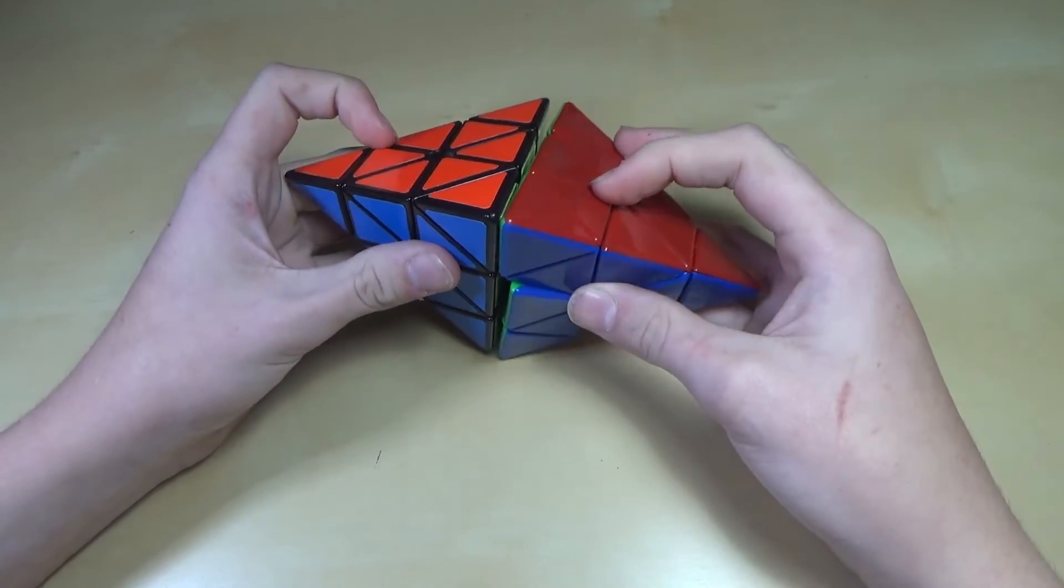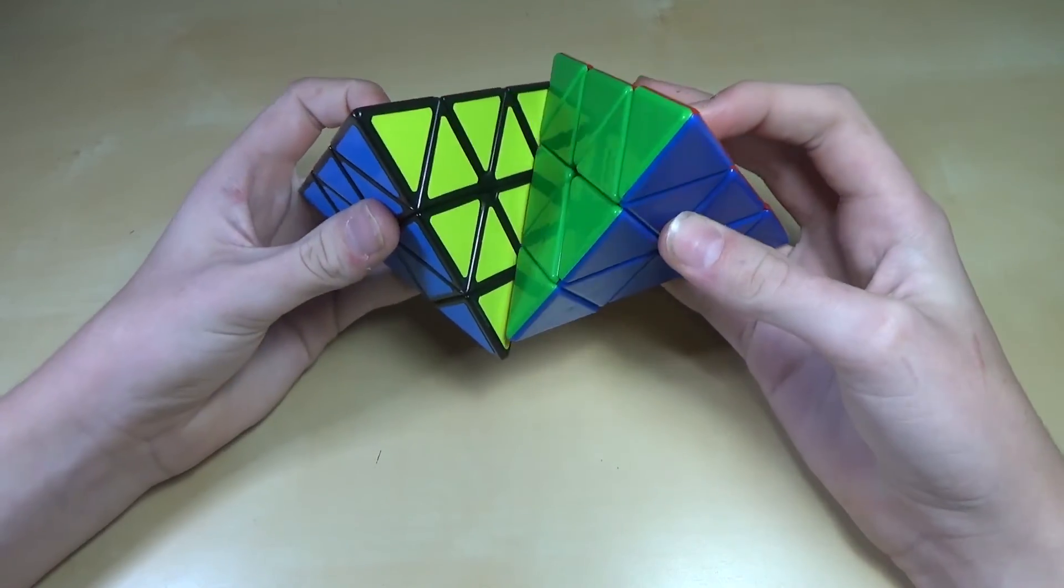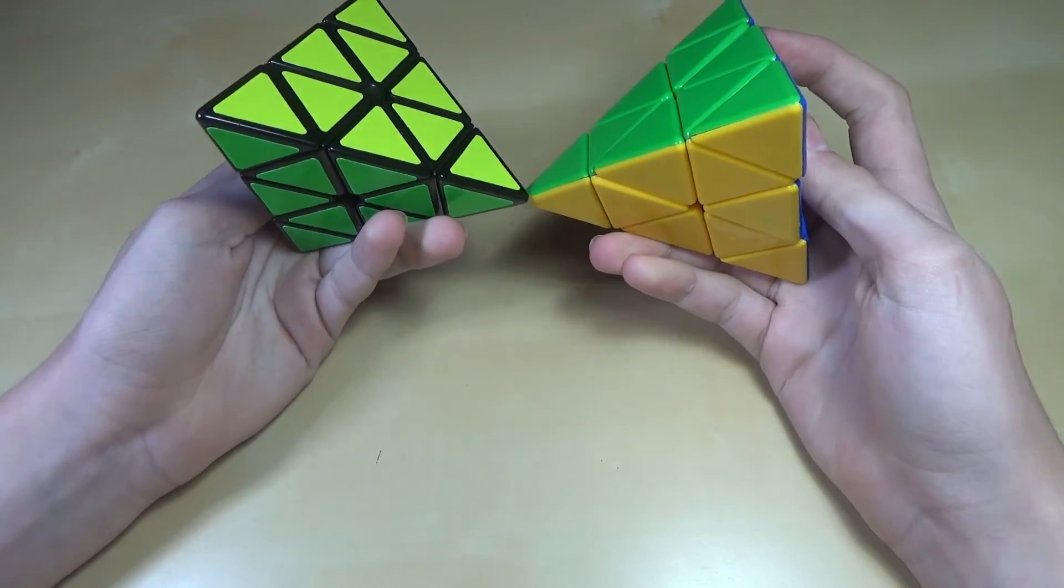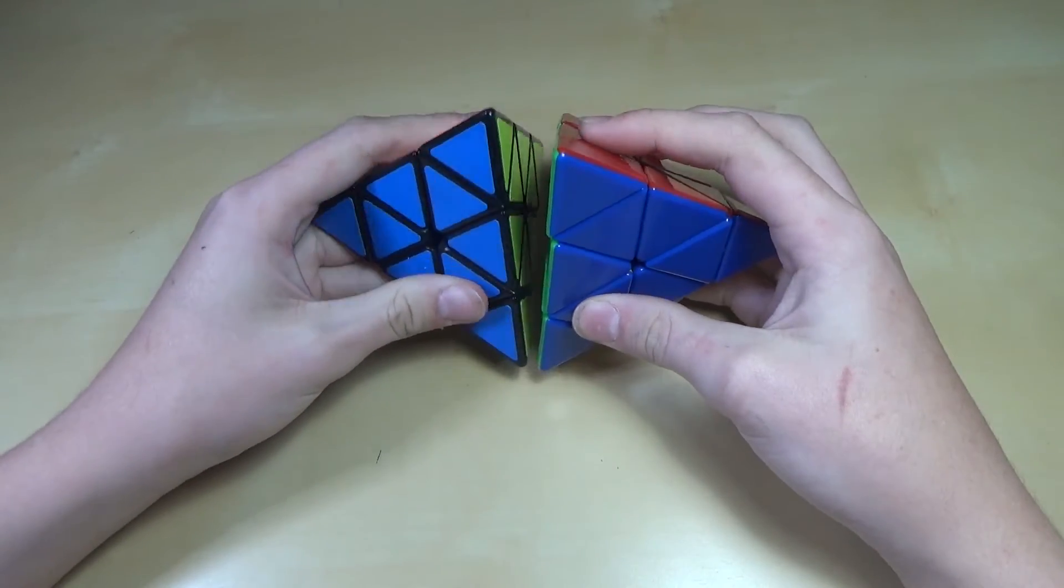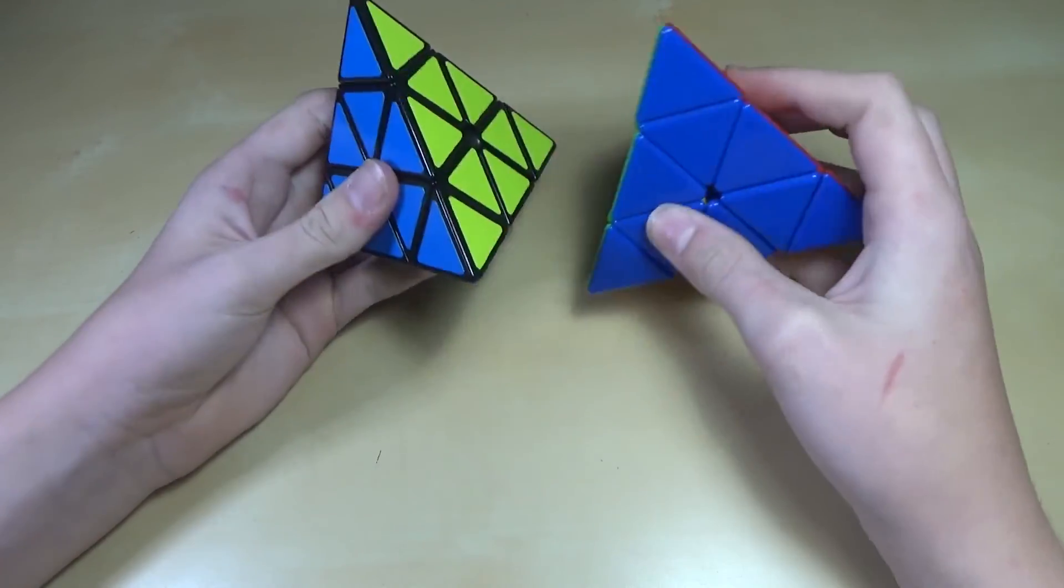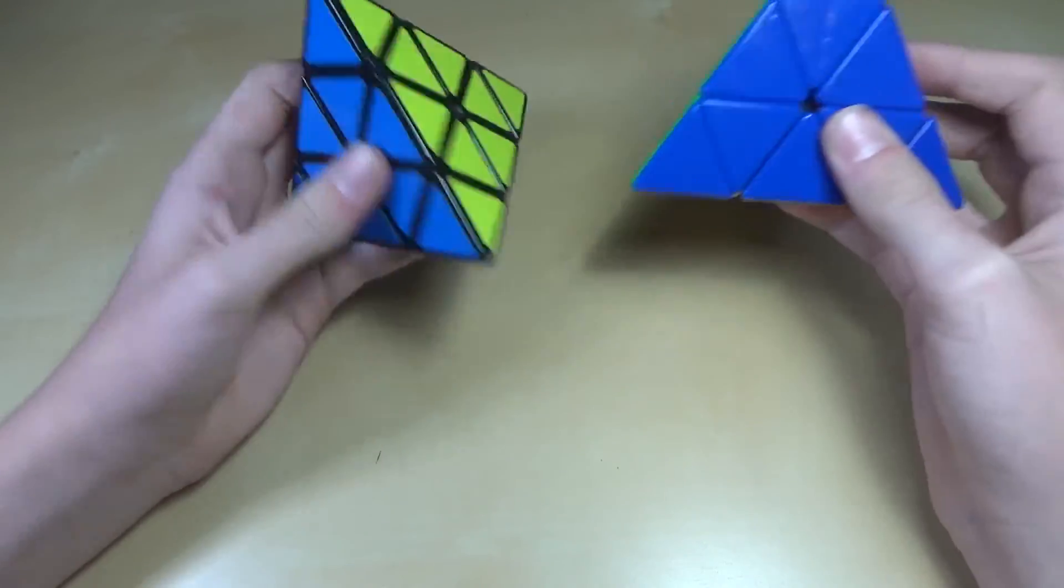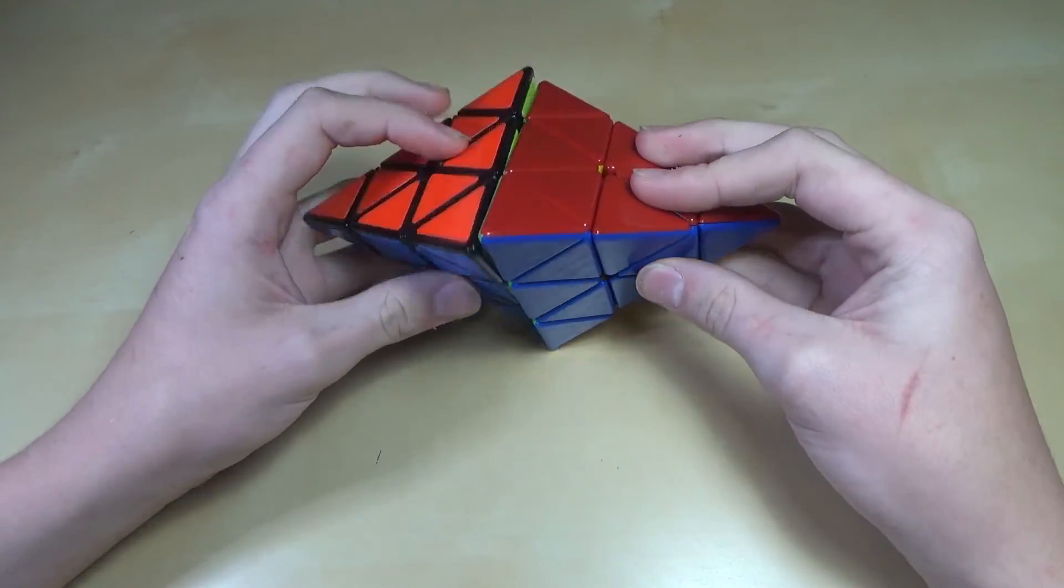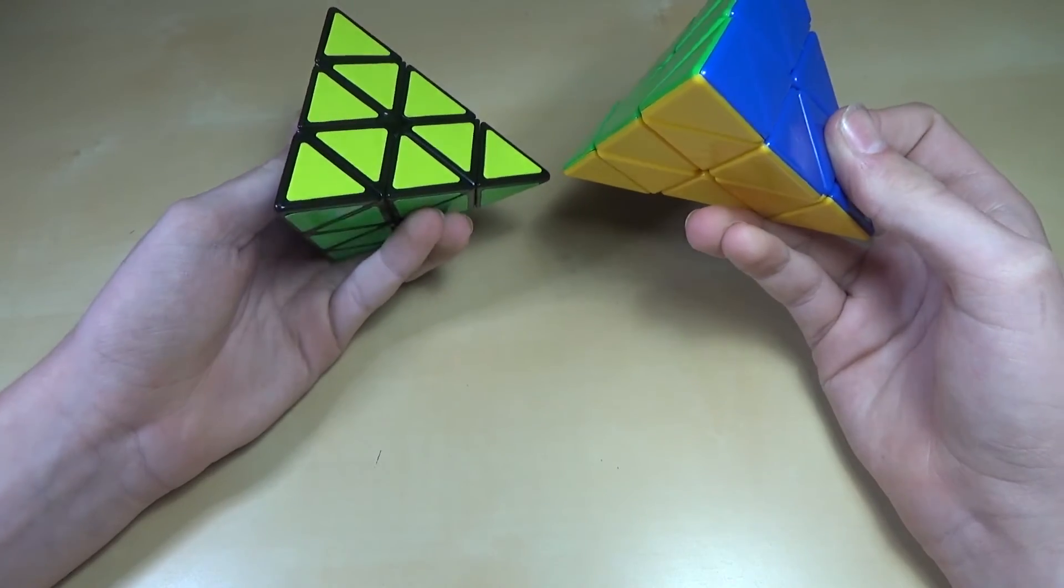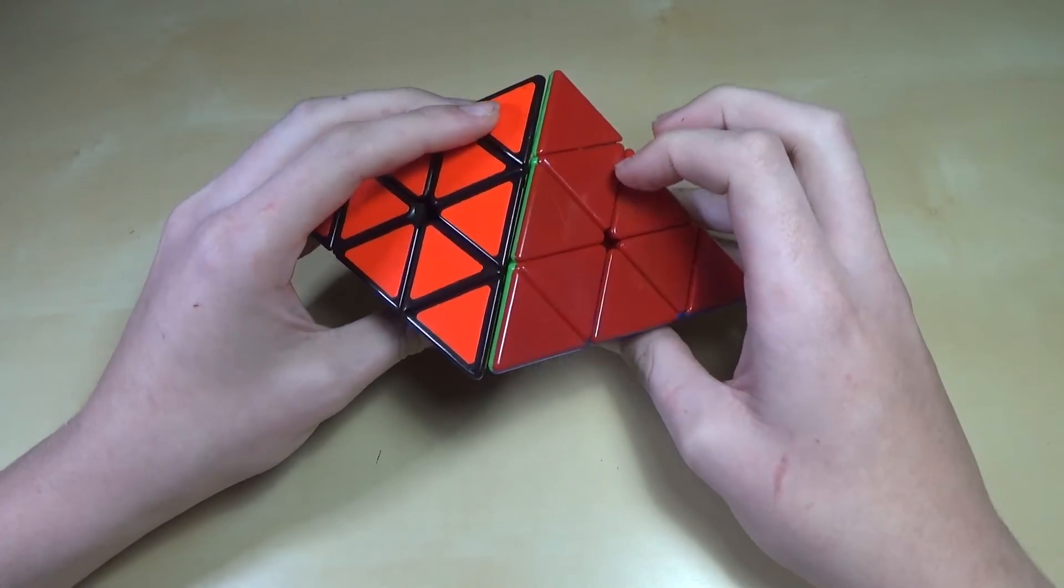So yeah, that's pretty much it for these two patterns. They're both pretty simple patterns that you can do on a Pyraminx. And along with that other checker pattern which I have in the other video, those are just all the three main Pyraminx patterns that I've been able to come up with. I'm sure there's more and I'm sure I wasn't the first one to come up with those, but they're still pretty cool.